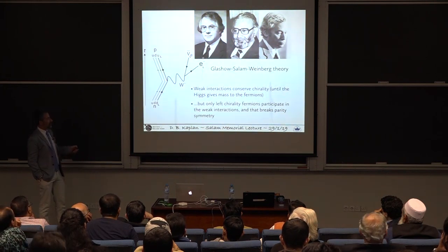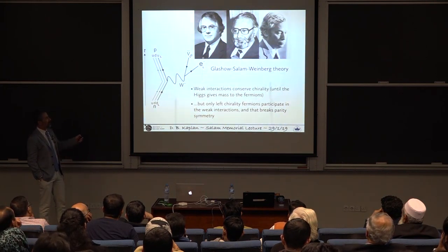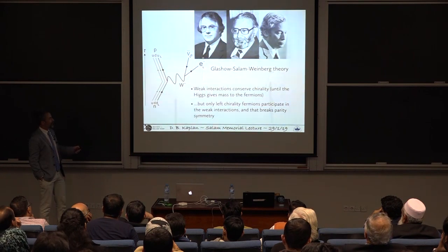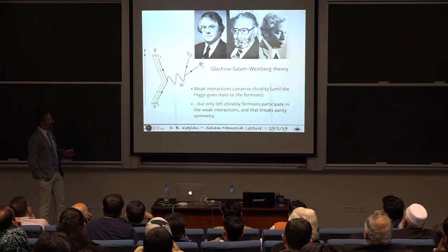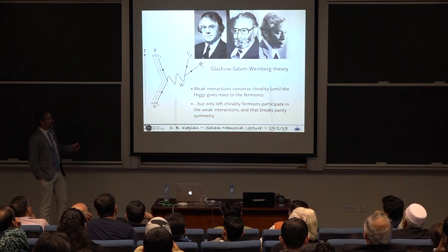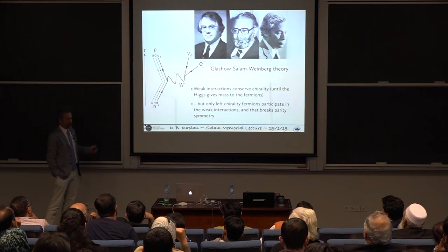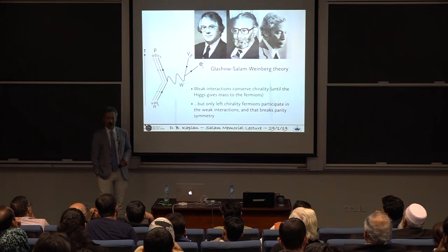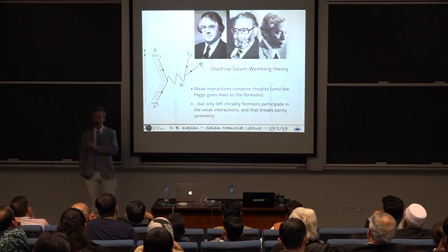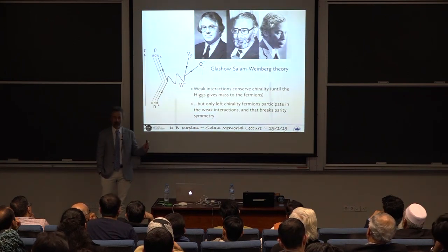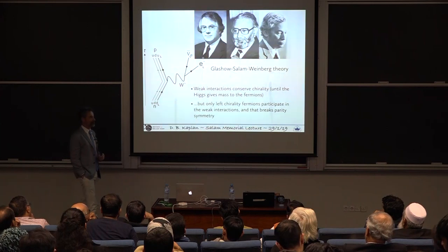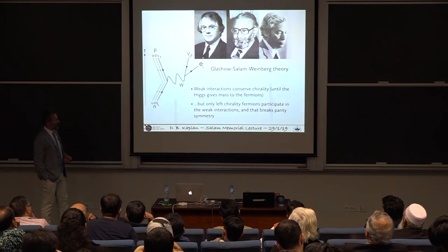And that's where Glashow, Salam and Weinberg put forth their great theory, which is a key part of what's now called the standard model, because it works so well. And they explain how weak interactions like this, here I show how a neutron decays into an electron, an anti-neutrino, and a proton, called beta decay. They show how that worked with the W particle that they hypothesized. And a key feature is that the fermions, the quarks, and the electrons, and the neutrino that interact with the weak interactions, are all left-handed. This is how the weak interactions break parity. The weak interactions ignore right-handed particles.